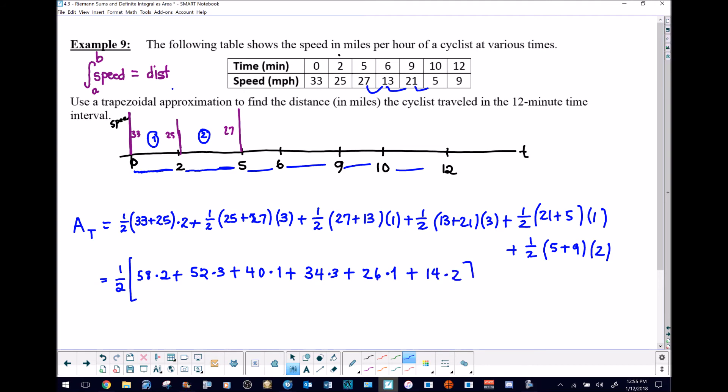Next we just do some more arithmetic. 58 times 2 would be 116. 52 times 3 is 156. 40 times 1 is easy. 34 times 3, that would be 102 I believe. 26 times 1, and then 14 times 2.